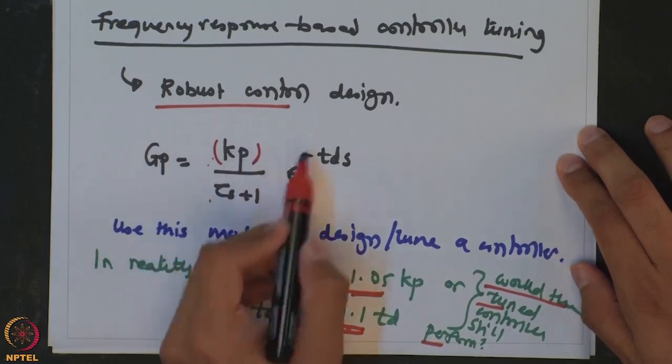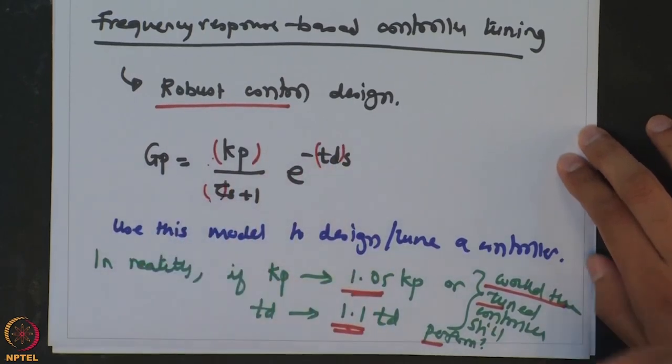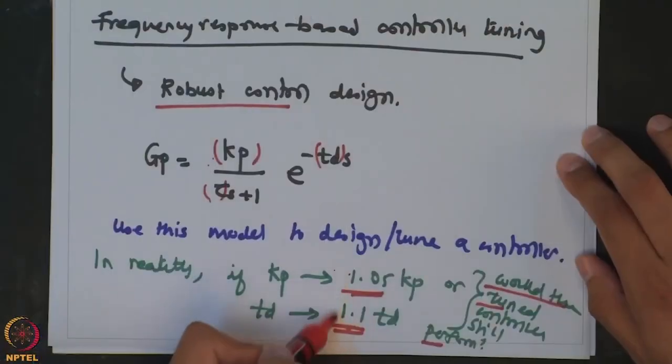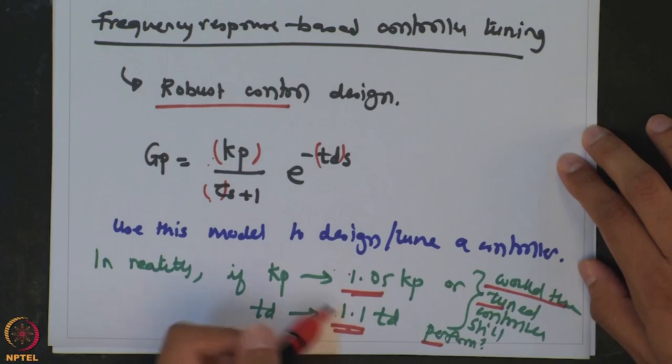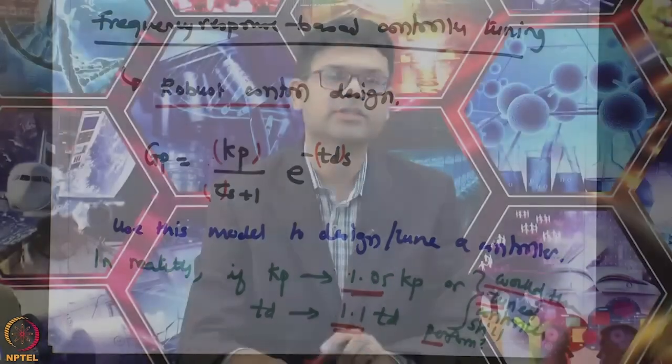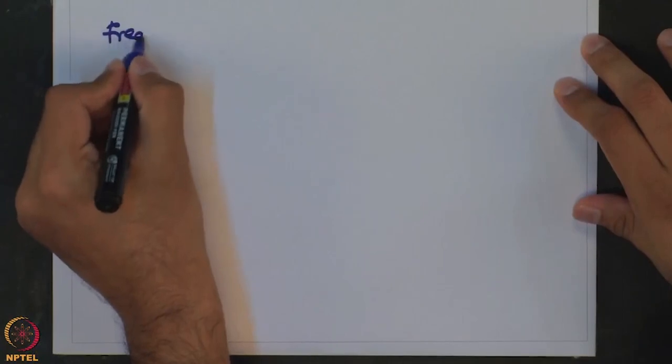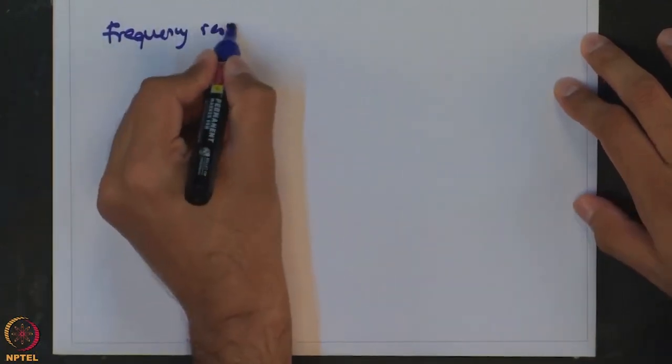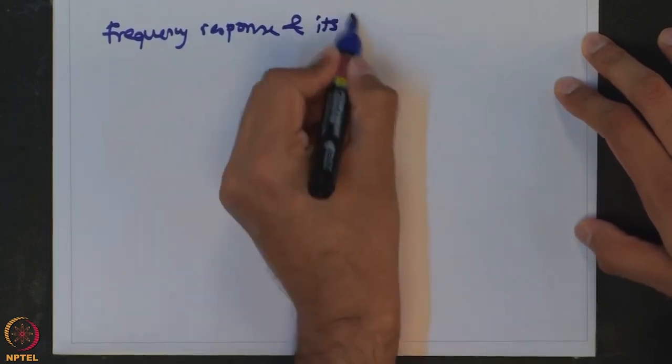There is always a possibility that some errors might happen within these parameters, since models are typically obtained from data and may not capture reality to a great extent. So your controller should be able to handle any variations in such parameters. When you want a design that allows a certain freedom in terms of variations in process parameters, that method is known as robust controller design. We will see how such a controller can be tuned using frequency response, and for that we will revisit what frequency response is and its relation to stability.